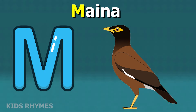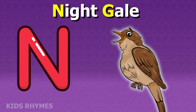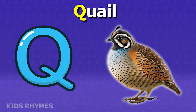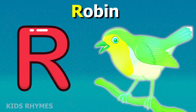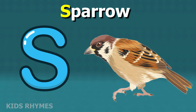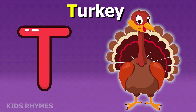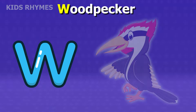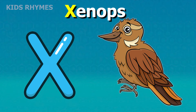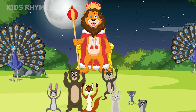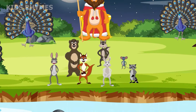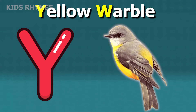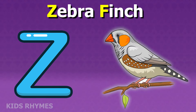M for mynah, N for nighthawk, O for owl, P for parrot, Q for quail, R for robin, S for sparrow, T for turkey, U for owlet, V for vulture, W for woodpecker, X for xenops, Y for yellow warbler, Z for zebra finch.